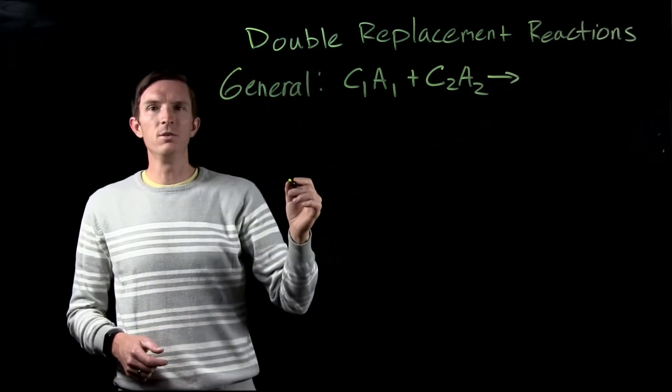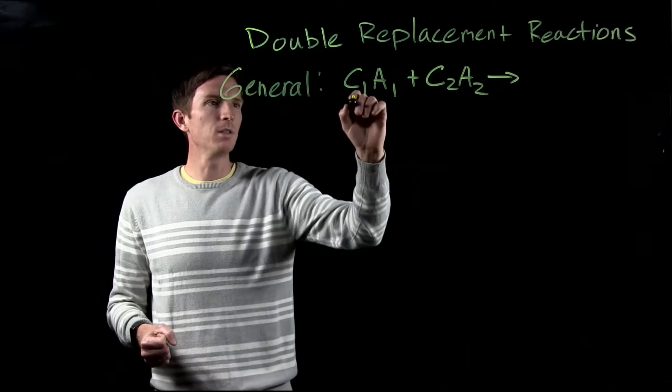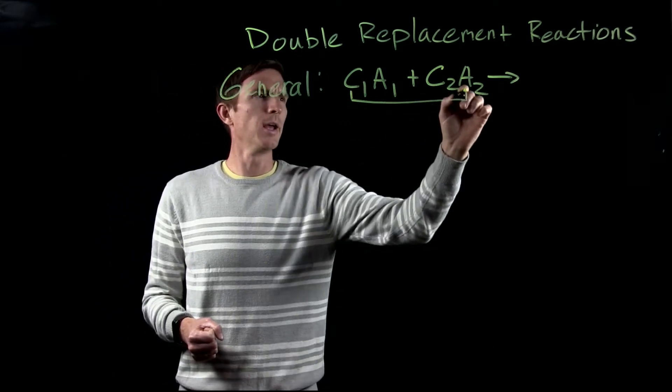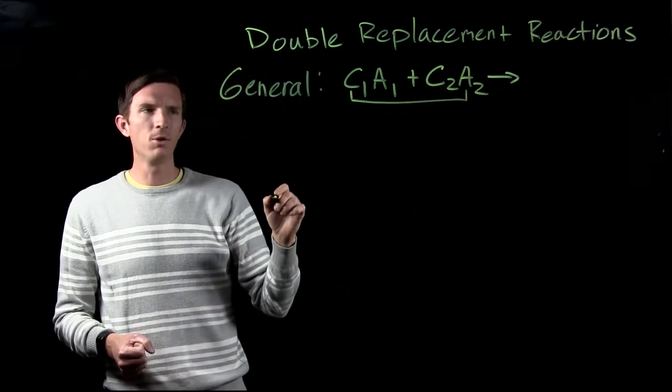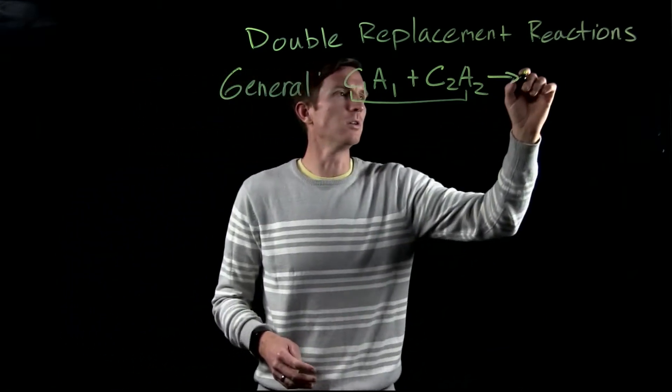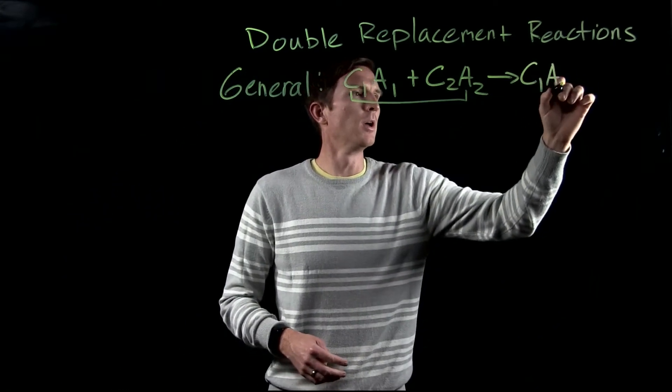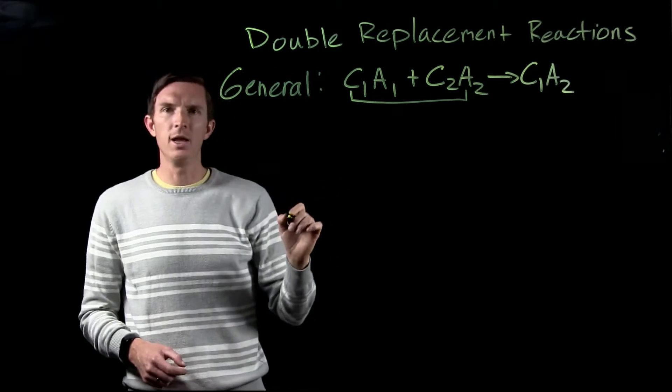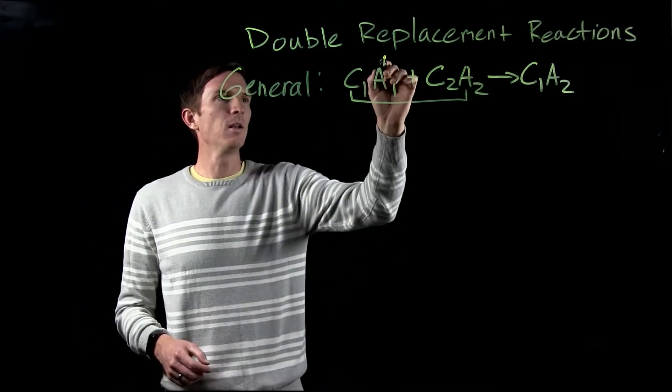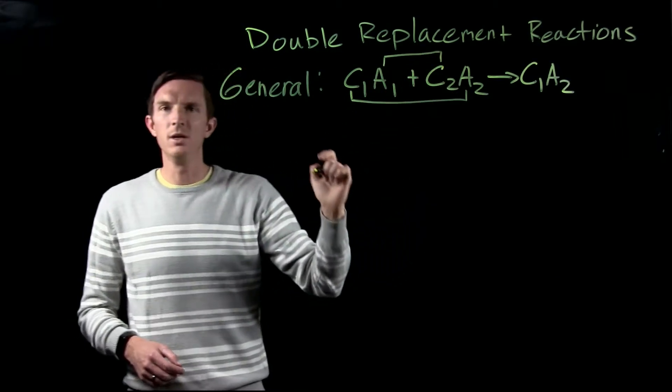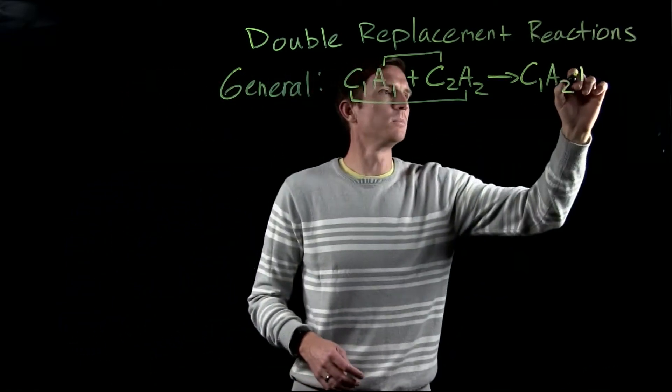All they're going to do is switch ion partners. So I'm going to take cation 1 and the new compound that's going to be formed with that is with anion 2. So we're going to form the new compound cation 1, anion 2. And then our other compound's going to be cation 2 combining with anion 1.